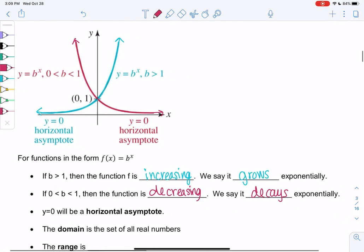You'll notice in both cases, we get a horizontal asymptote at y equals 0 because the graph flattens out. It doesn't cross 0, it just flattens out.